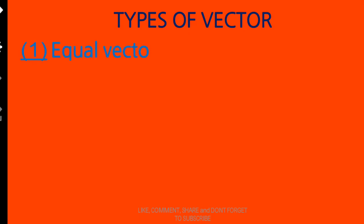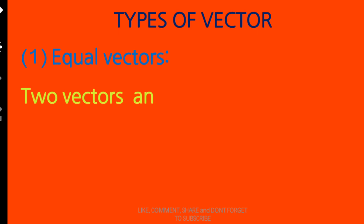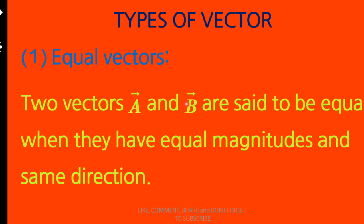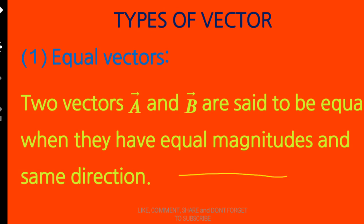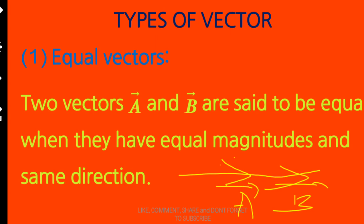Let us understand the types of vectors. The first type is equal vectors. Two vectors, vector A and vector B, are said to be equal vectors when they have equal magnitude and the same direction. The direction of the vector should be the same as well as they should have equal magnitude. Such vectors are called equal vectors.